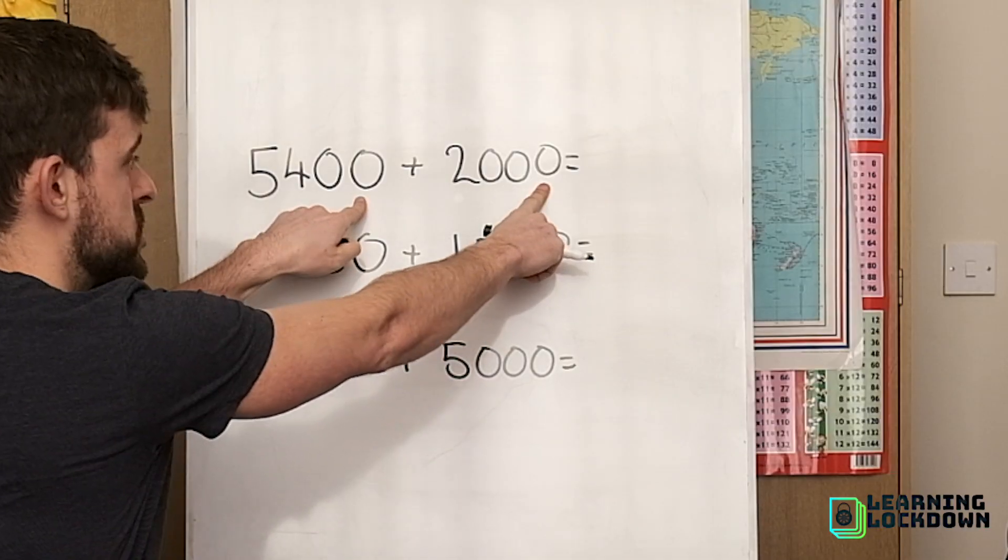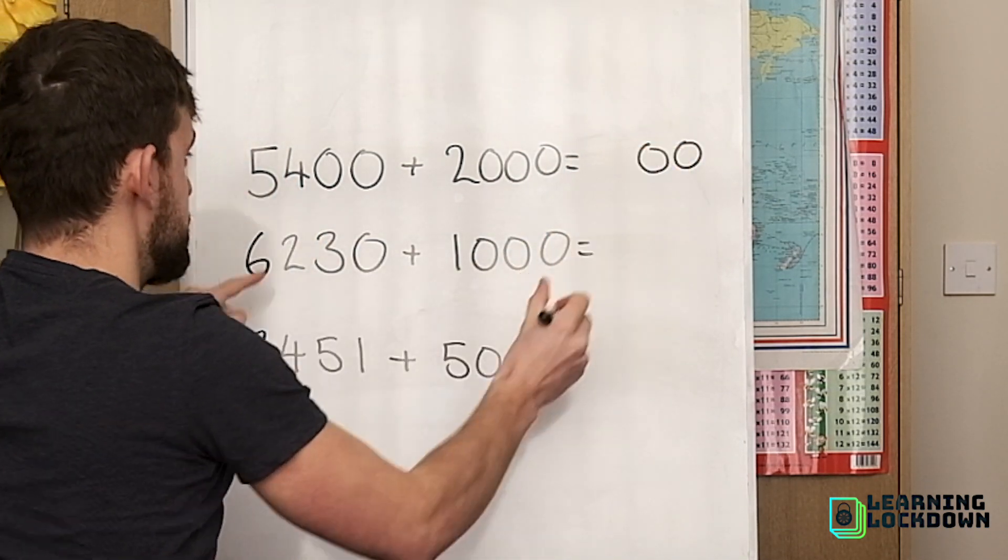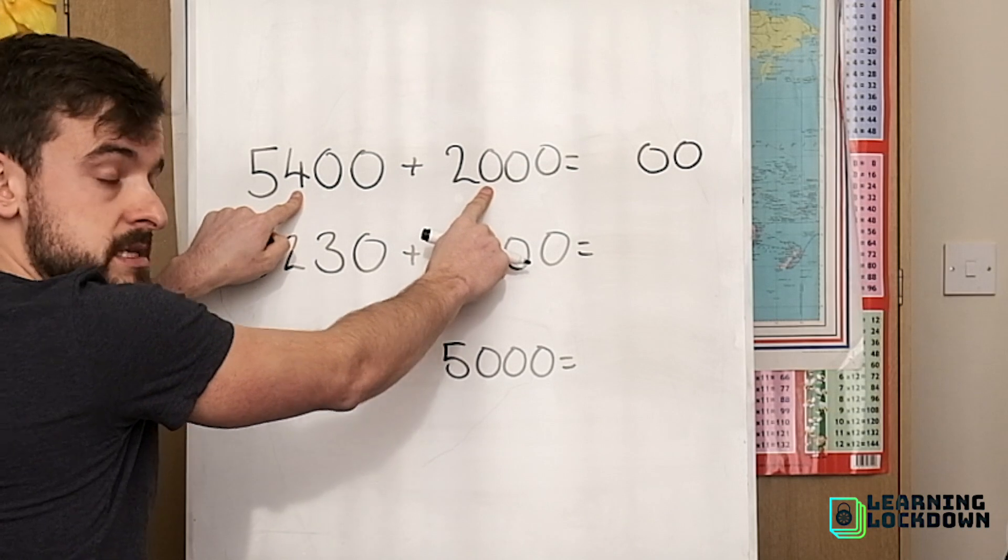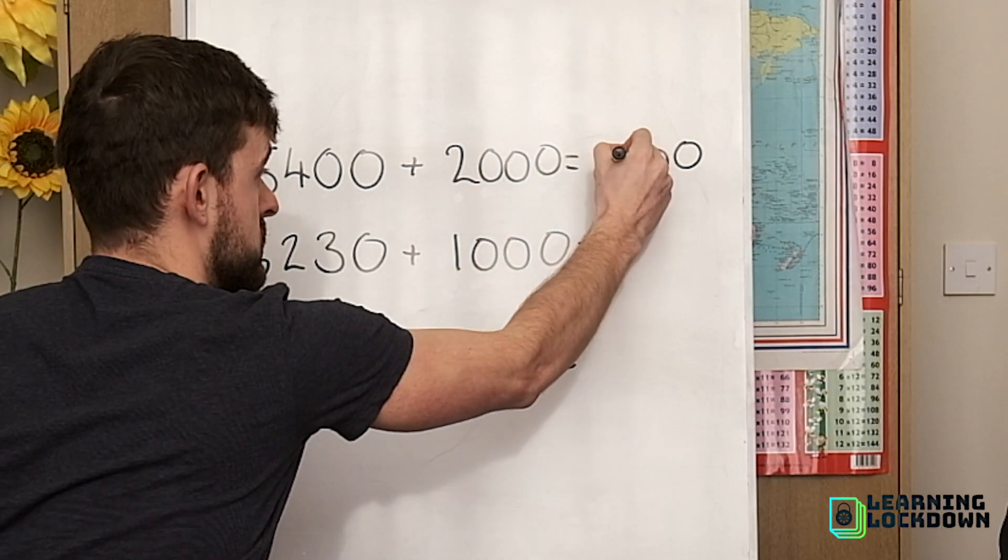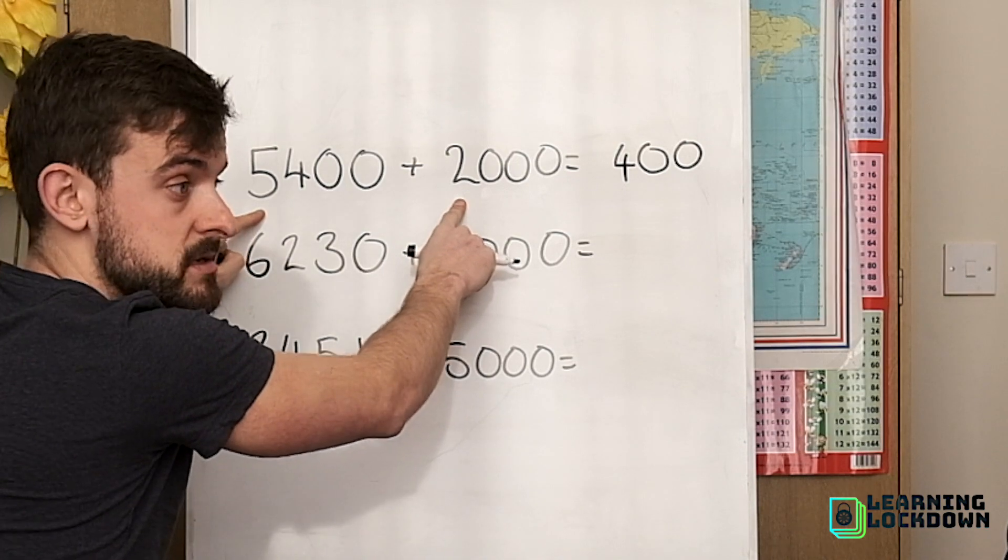Our ones aren't going to change. Zero add zero, zero. Tens: zero add zero, zero lots of ten. We're doing this every time. Four lots of hundred add zero lots of hundred, four lots of a hundred. And finally into the thousands: five lots of thousands add two lots of a thousand, seven thousands.